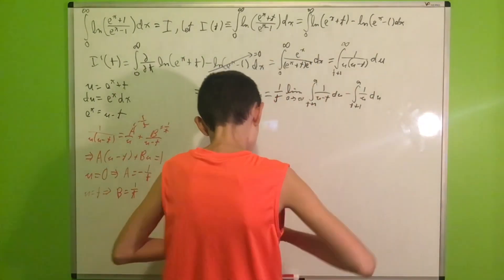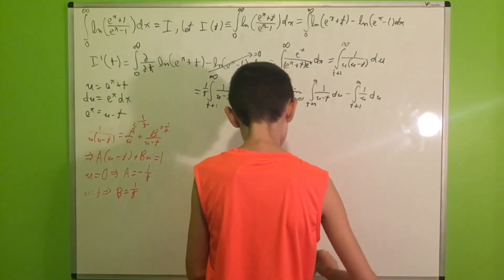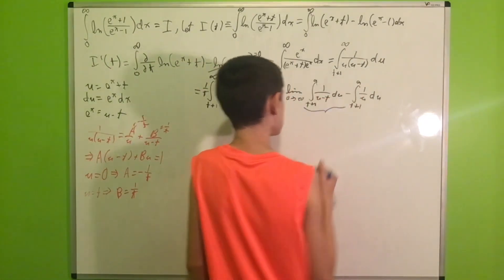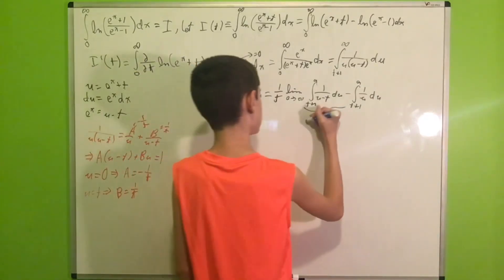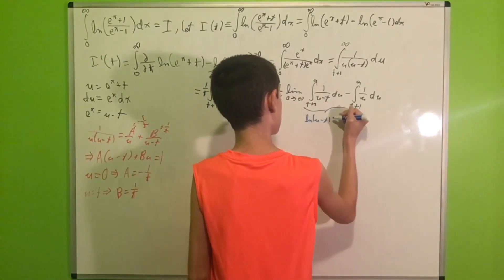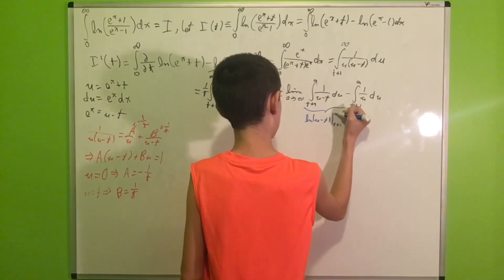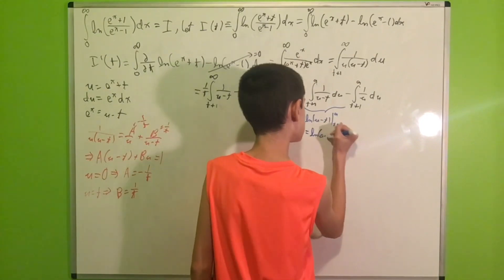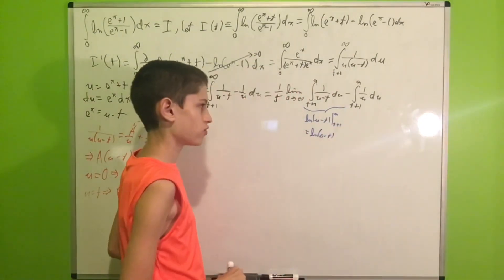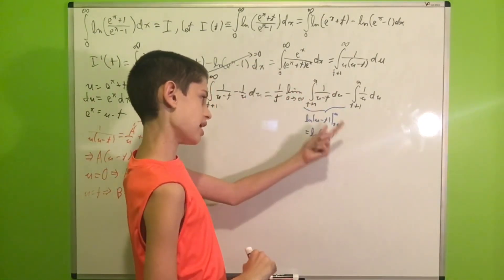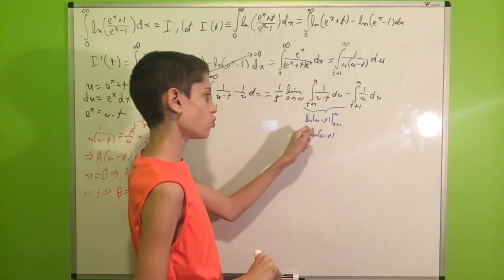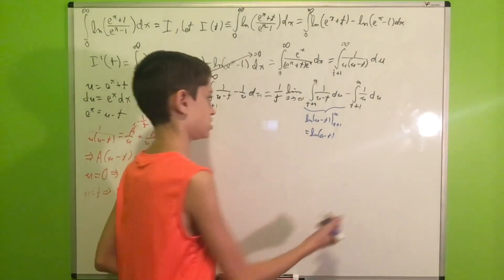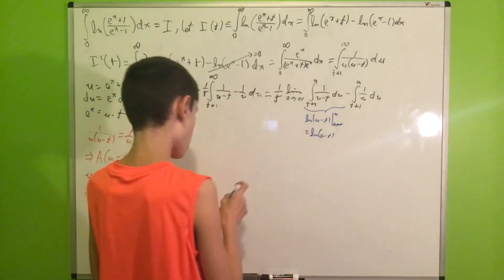The first integral equals ln|u − t| evaluated from t+1 to a, which gives ln(a − t). Plugging in t+1 gives ln(t + 1 − t) = ln(1) = 0. The second integral gives ln|u| evaluated from t+1 to a, which is ln(a) − ln(t + 1). So altogether we get ln(a − t) − ln(a) + ln(t + 1). At t+1, the first integral's lower bound contribution goes to 0.